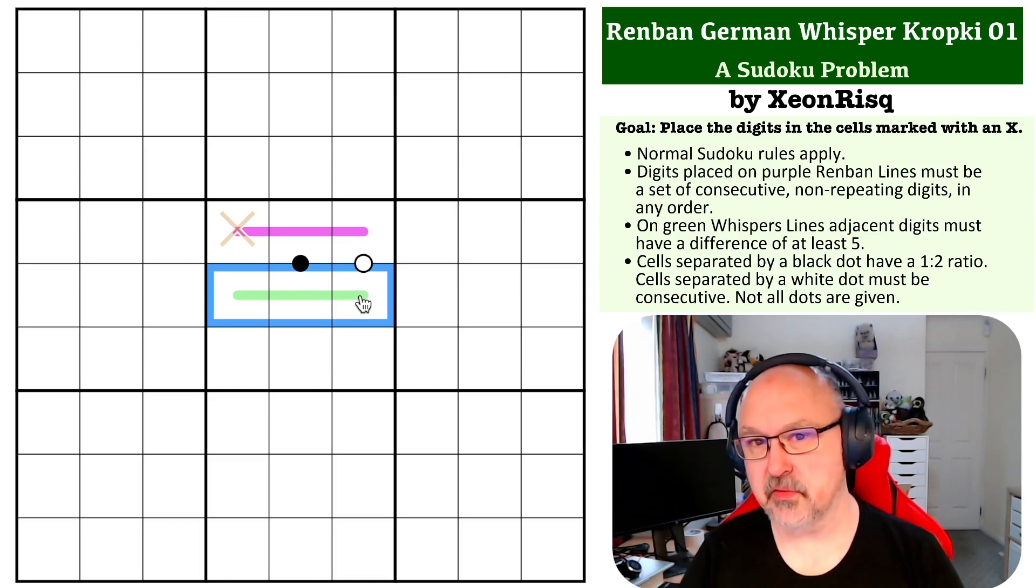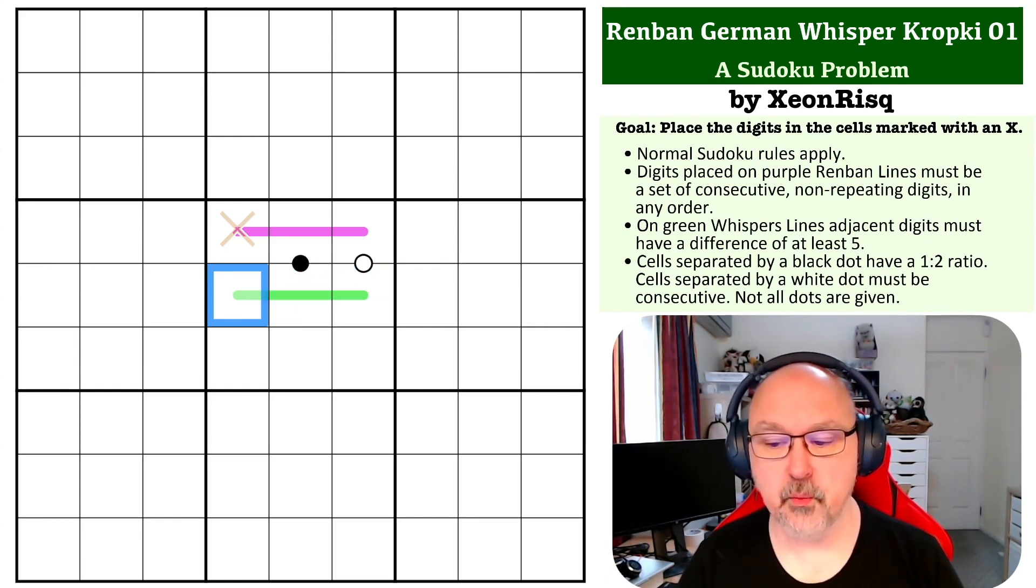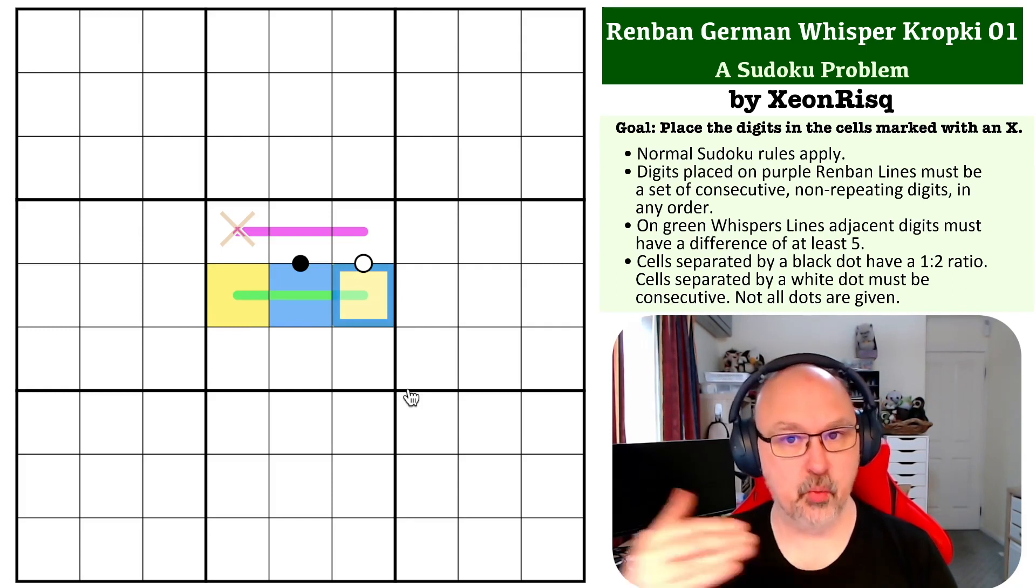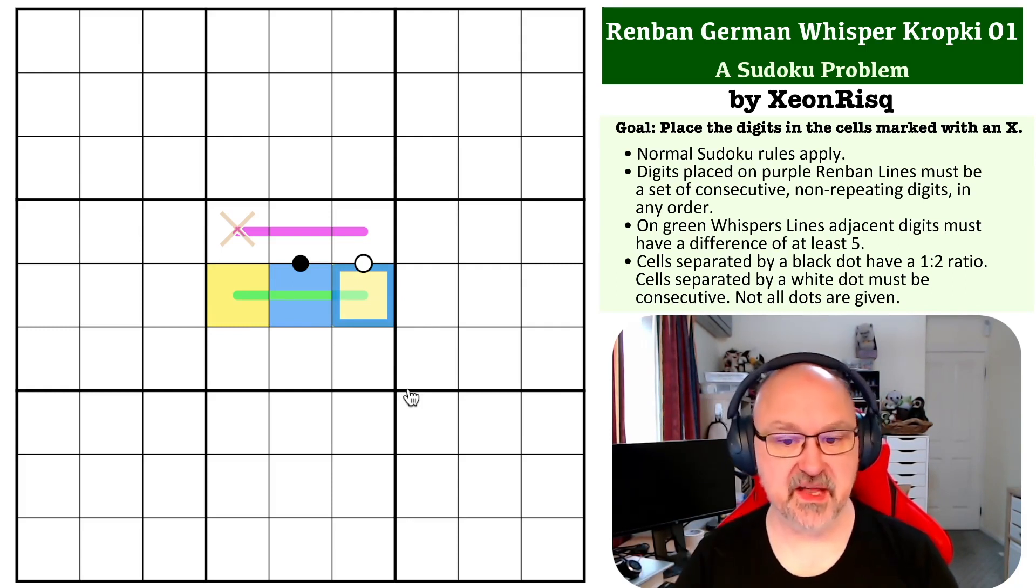We also know on a whisper line that it must alternate polarity, and by that we mean it must contain a low digit, one to four, and then the next digit will be high, six to nine, because of the five difference. So we know that this will go from one polarity to the next polarity, and then back to the first polarity. It'll always keep alternating that polarity.